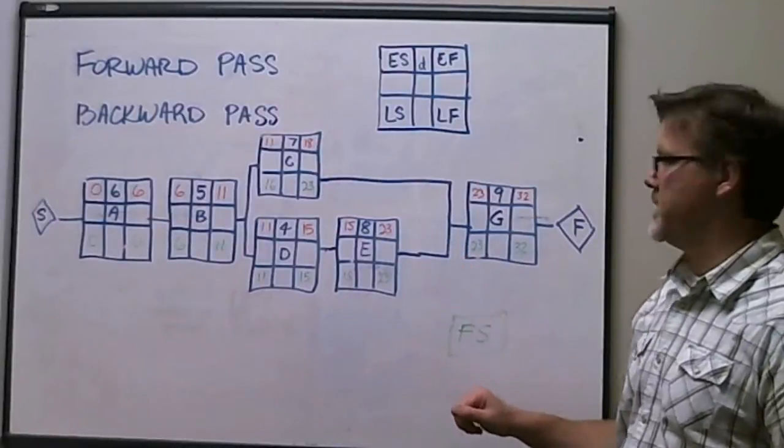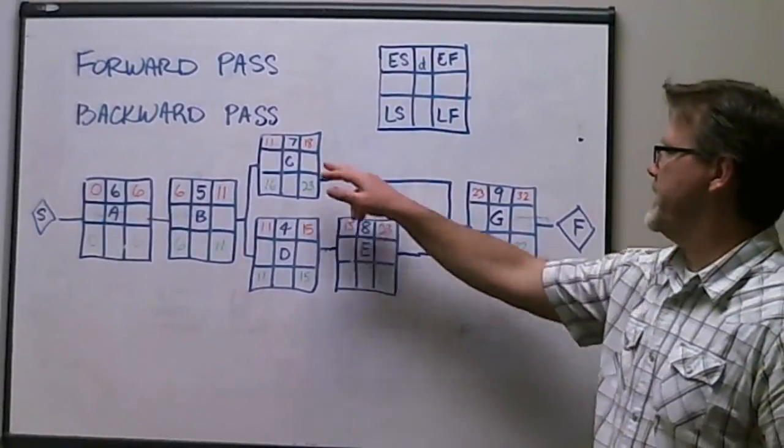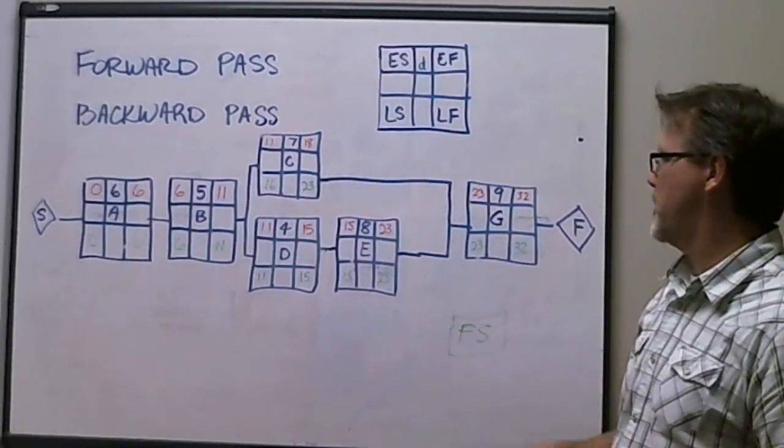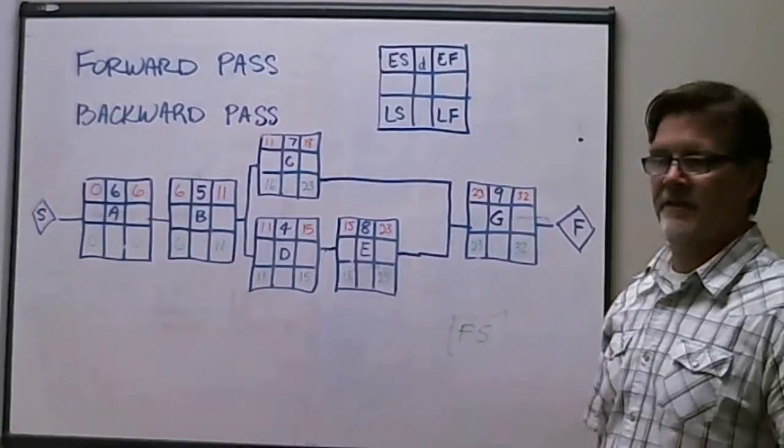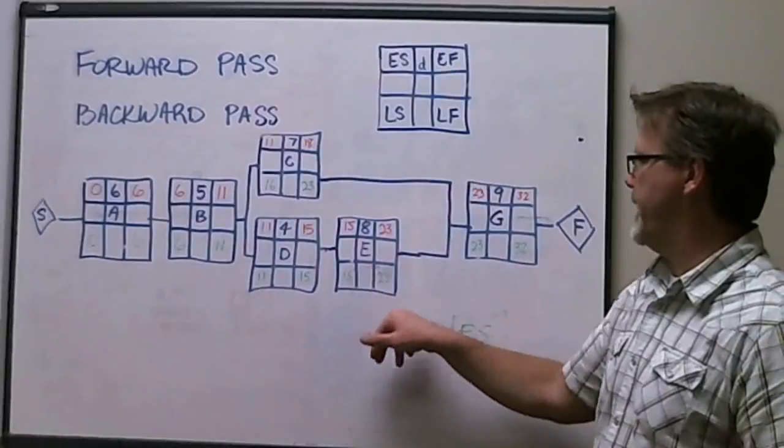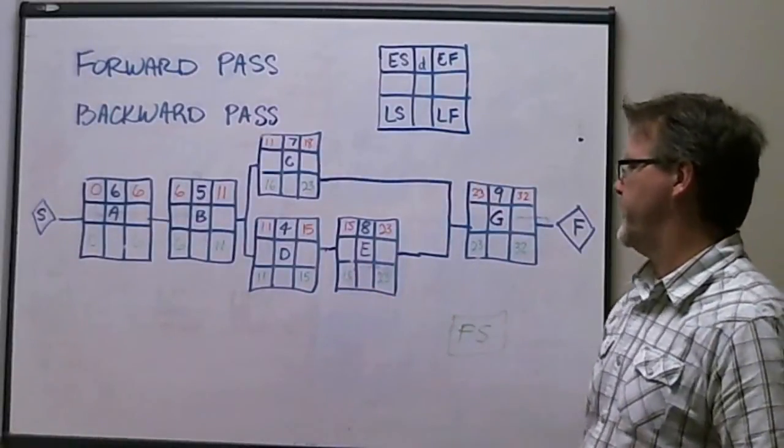Because we know, worst case scenario, activity G's late start is 23. These activities absolutely have to be done in order for this activity G to start on day 23. So they have to finish on day 23. Again, doing the math, 23 less 8 is 15. So the late start date for E is 15.